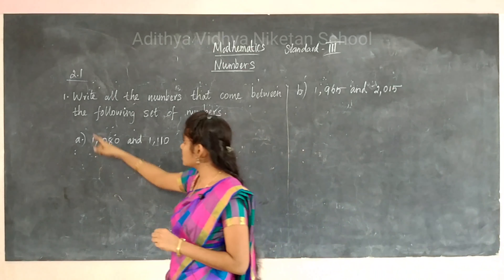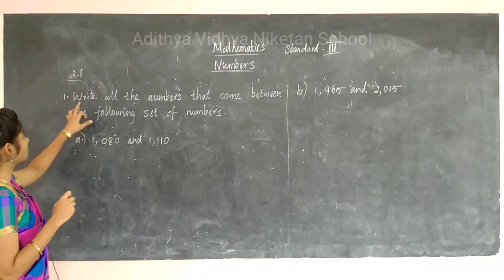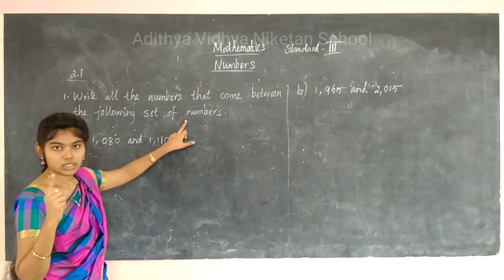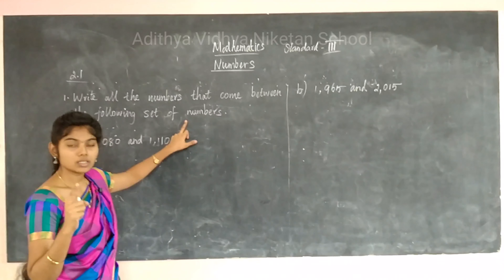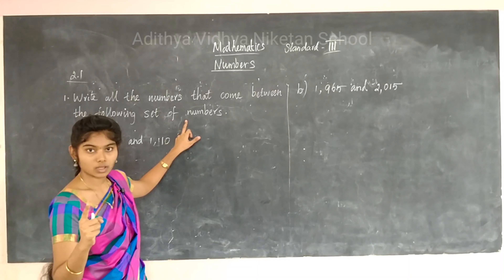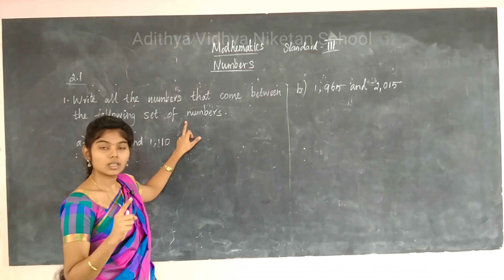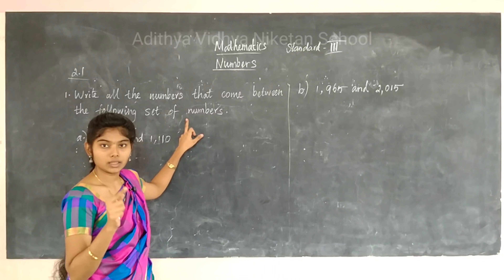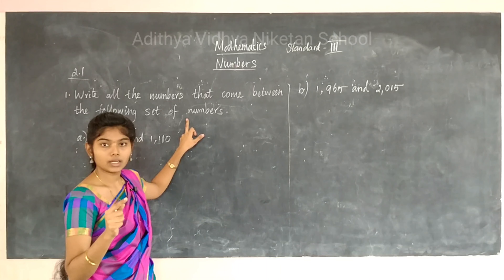The first sum is: write all the numbers that come between the following set of numbers. You know how to read and write 4-digit numbers. The smallest 4-digit number is 1000, and the largest 4-digit number is 9999.